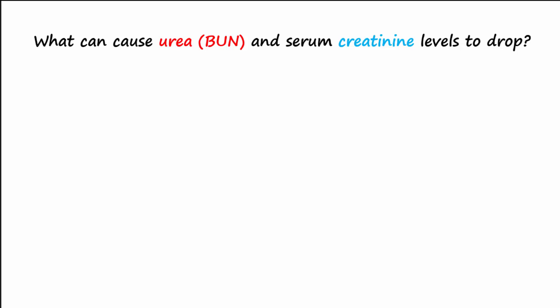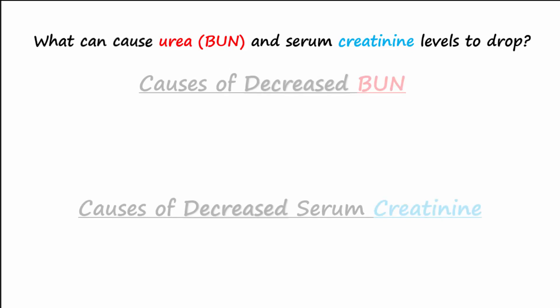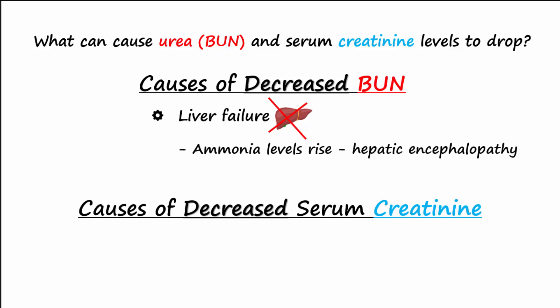What kinds of circumstances cause BUN and creatinine to drop? With liver failure, urea is not being produced by the liver, and ammonia levels will rise, which can lead to damage to the brain, called hepatic encephalopathy.